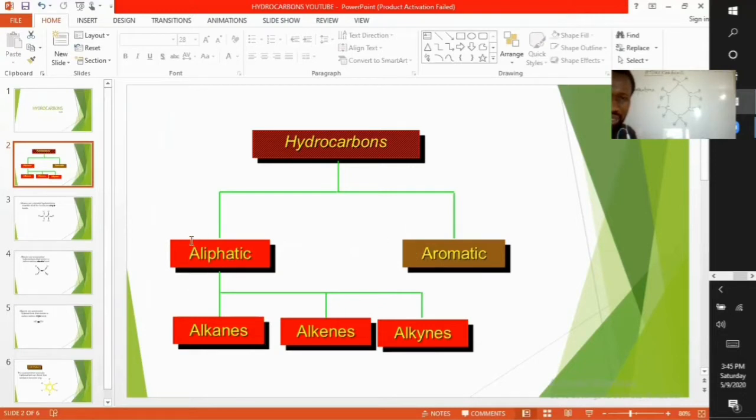Aliphatic hydrocarbons are composed of acyclic and cyclic carbon atoms. That is, the carbon atoms are arranged in straight or branched chains or they are arranged in form of a ring. In aromatic hydrocarbons, the carbon atoms are only arranged in a cyclic form.